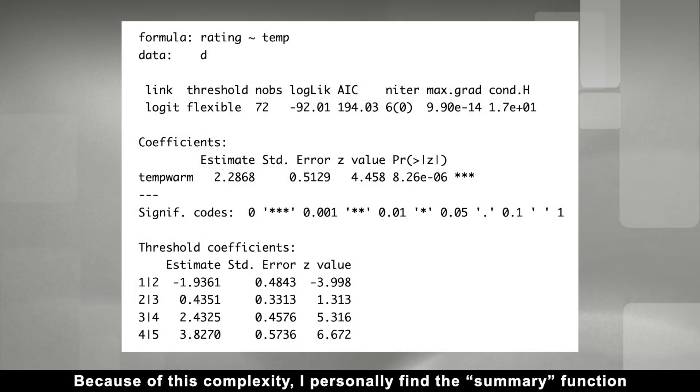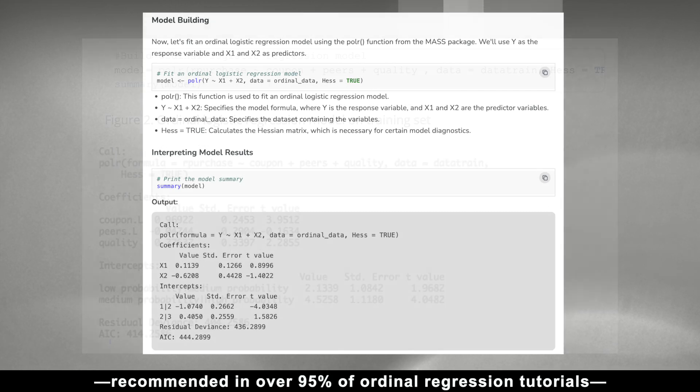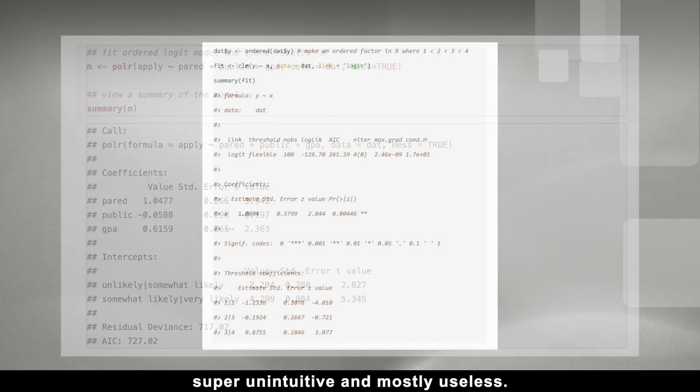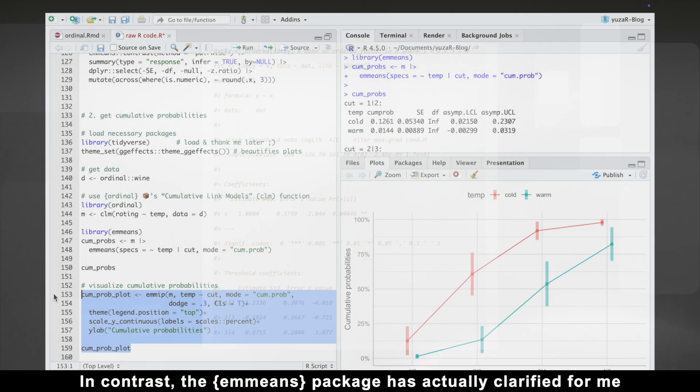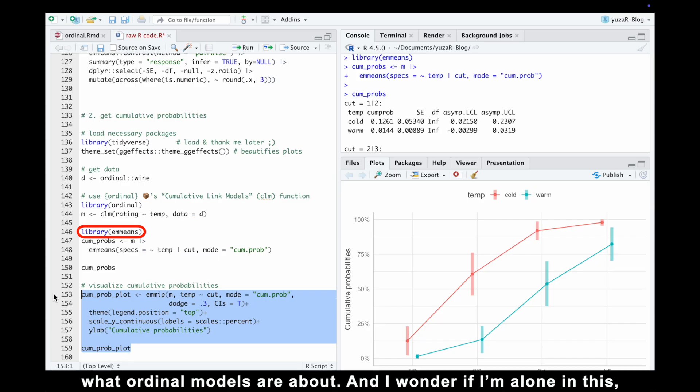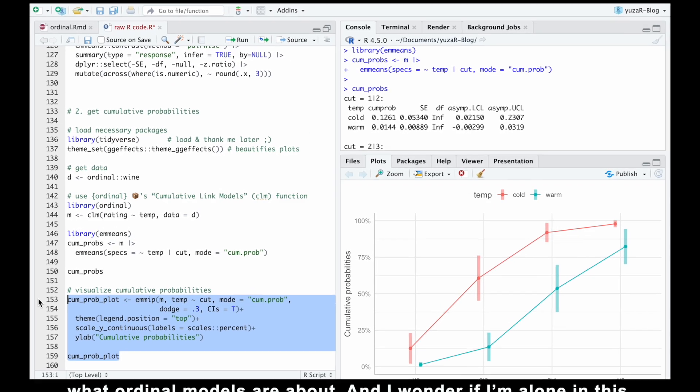Because of this complexity, I personally find the summary function recommended in over 95% of ordinal regression tutorials super unintuitive and mostly useless. In contrast, the emmeans package has actually clarified for me what ordinal models are about. And I wonder if I am alone in this.